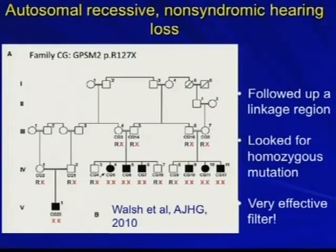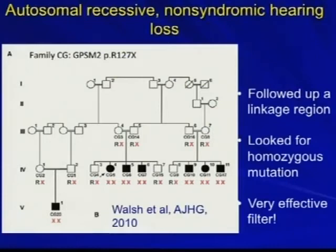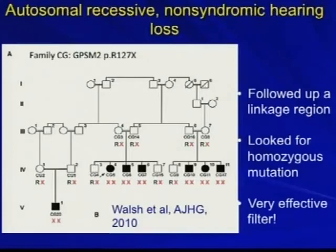The hearing loss example shows autosomal recessive with consanguinity — double lines throughout the pedigree. Everyone who's shaded has hearing loss and they're all offspring of consanguineous parents, so you'd expect all affected individuals to carry the same homozygous mutation. You only need to sequence a couple of affected individuals, and since you're looking for a homozygous mutation, you can pop the gene out very quickly. Big family, lots of affecteds, known homozygous mutation required — very efficient.